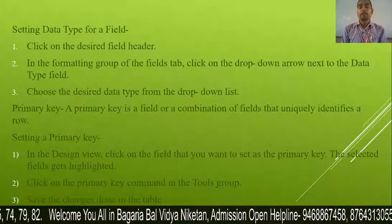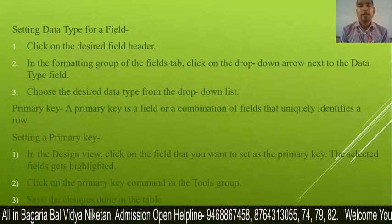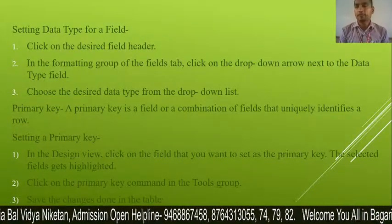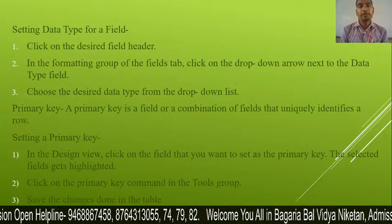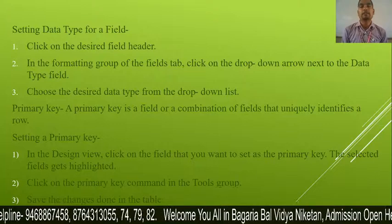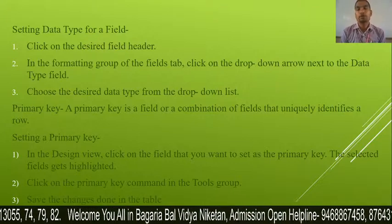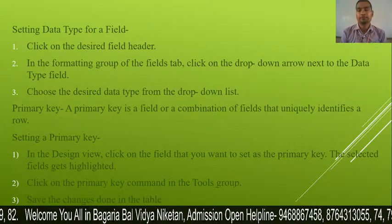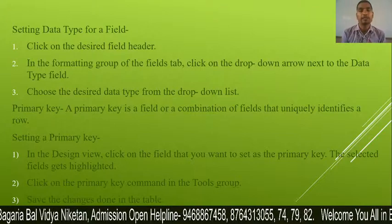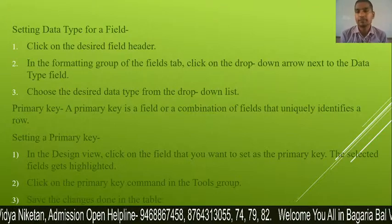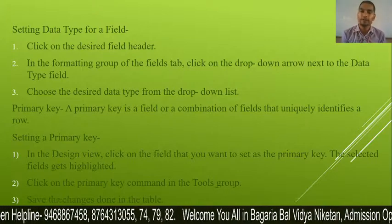Next is the Primary Key. A primary key is a field or combination of fields that uniquely identifies a row. We can create a particular column that does not repeat and has no null values, such as a roll number or enrollment number, to uniquely identify the data.